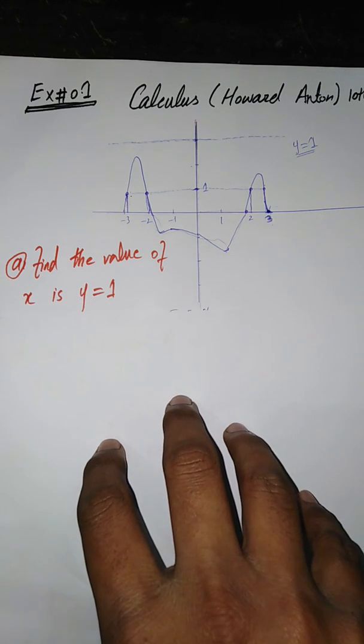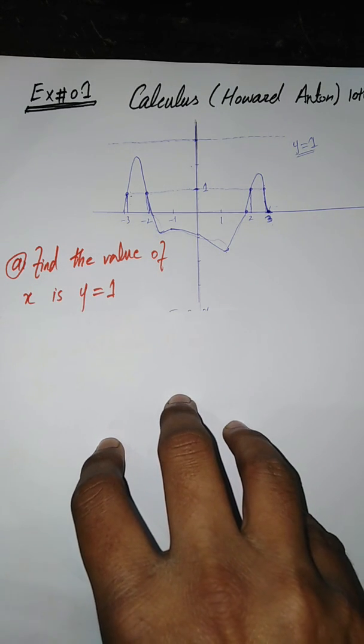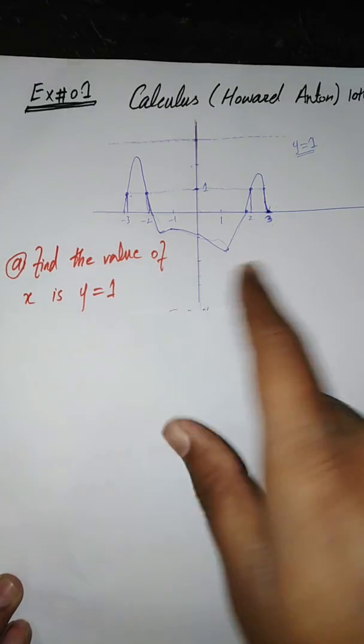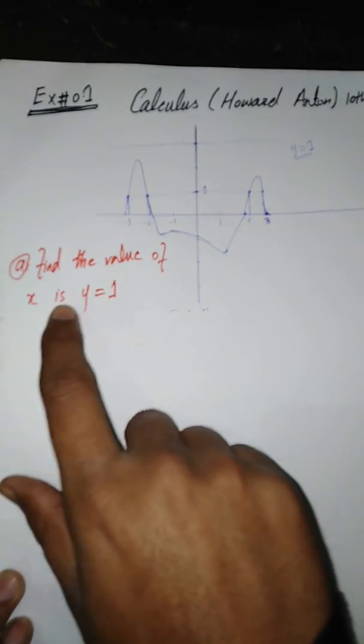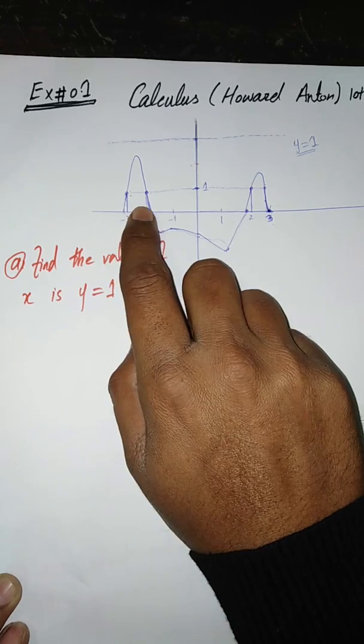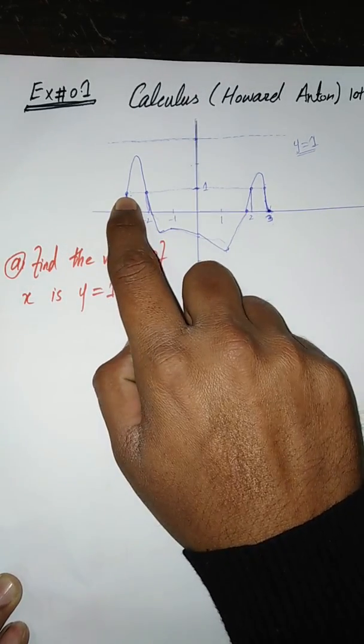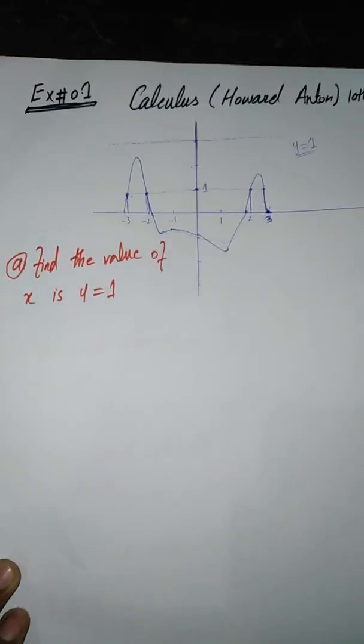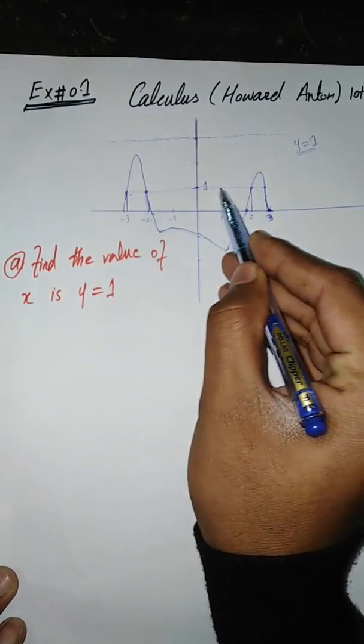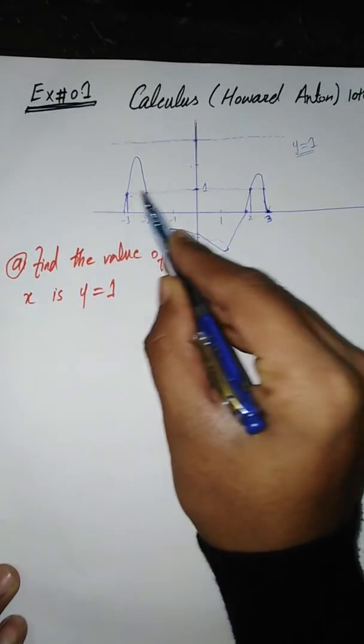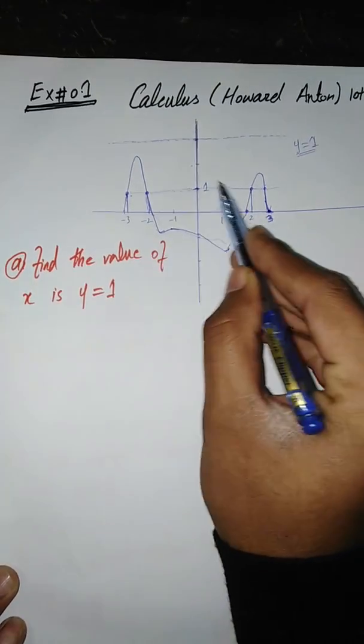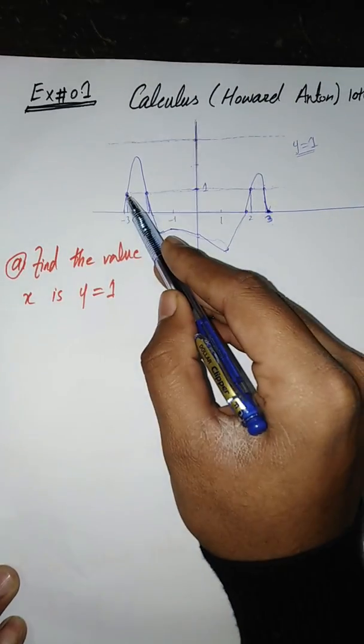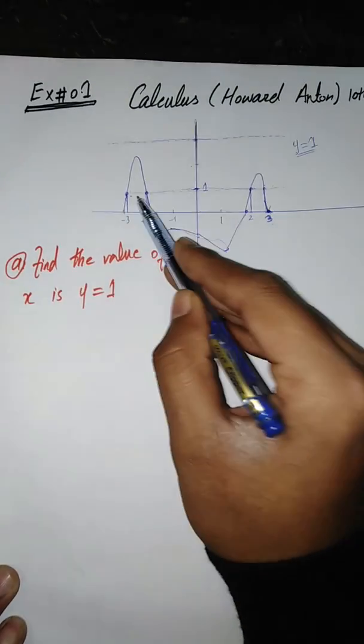The first part of question number one is find the value of X when Y equals 1. So we have to find for what values of X, Y is 1. We need to find the values where Y is 3. So here Y is 3, so I draw a dotted line for Y equals 3. This line intercepts the graph at four different points, so at those points we have to find the value of X.